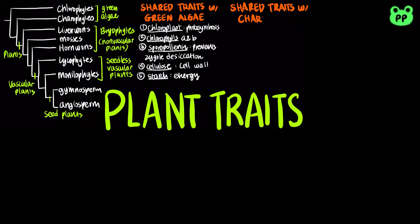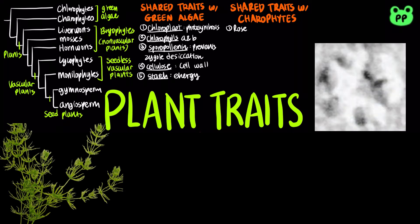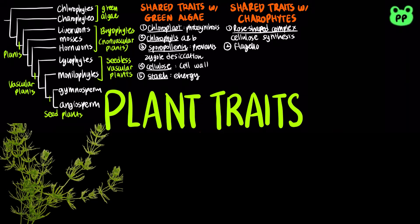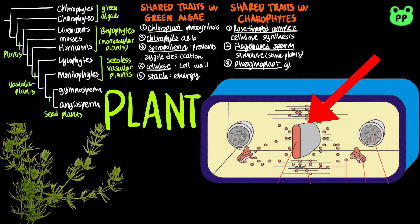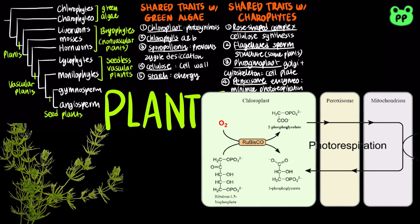In addition to the five traits, plants also share four unique traits with charophytes, their closest related species. First, a rose-shaped complex for cellulose synthesis. Second, the structure of flagellated sperm, which is found in some early plants. Third, formation of a phragmoplast, which is an alignment of cytoskeletal elements and Golgi vesicles for cell plate formation. Fourth, peroxisome enzymes to minimize loss from photorespiration, a wasteful pathway that competes with the Calvin cycle, by using oxygen instead of carbon dioxide.